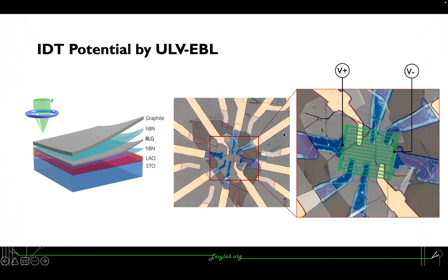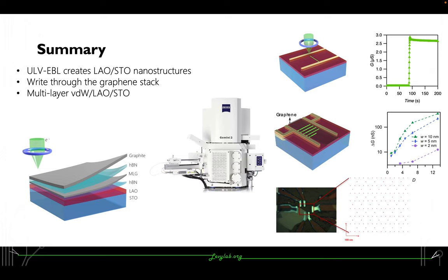Here is my summary. I showed that we're able to use ULV-EBL to create LAO/STO nanostructures and we can write through the graphene stack. Not only single layer graphene, but multi-layer van der Waals structures is also doable.